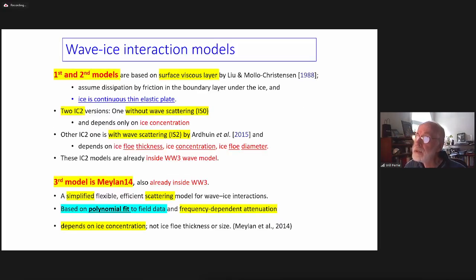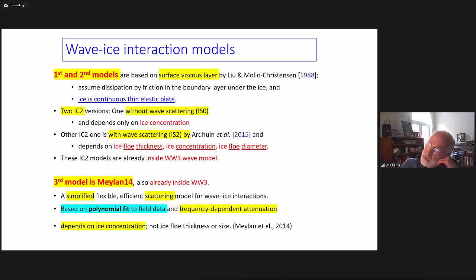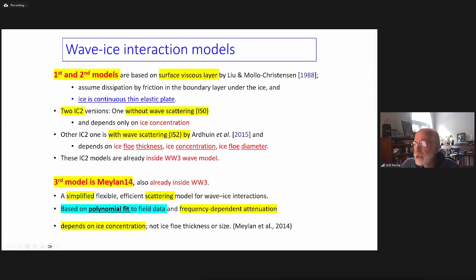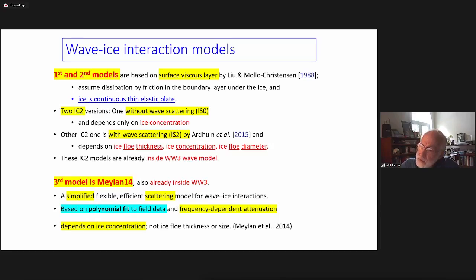I'll discuss in qualitative terms what these six models are. The first two date from decades ago — Anthony Liu and Molle Christensen from 1988. It's basically a layer model treating ice floes like a viscous layer over the top of the water. One version (IC0) has no scattering; the other has ice scattering among the floes, depending on ice floe thickness, concentration, and diameter. The third model by Mike Mann in 2014 is in WaveWatch III — a polynomial fit to field data representing scattering characteristics. These three models are in WaveWatch and anyone can download and use them.